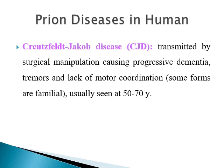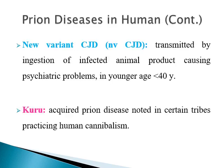Prion diseases can develop in both humans and animals. In humans, we have three forms. The first is called Creutzfeldt-Jakob disease, transmitted by surgical manipulation, and causes progressive dementia, tremors, and lack of motor coordination, usually developing in older people aged 50 to 70 years. Another form is called new variant Creutzfeldt-Jakob disease, transmitted by ingestion of infected animal products, causing mainly psychiatric problems and developing in younger patients under 40 years.